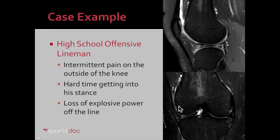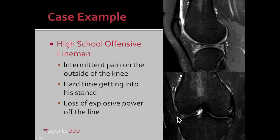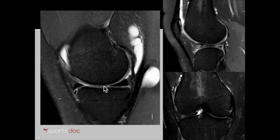Here's his MRI — the same sagittal view we saw before. You can see the discoid meniscus goes all the way across the knee. Looking at that from the front, instead of seeing the c-shaped meniscus with a black triangle, you have the meniscus going all the way across that compartment of the knee. Compare that to a normal meniscus where the black triangle in the front and back of the knee would appear, versus here where it extends all the way across.